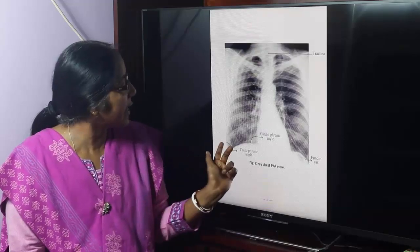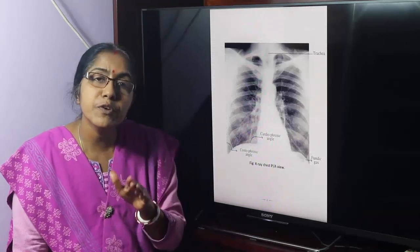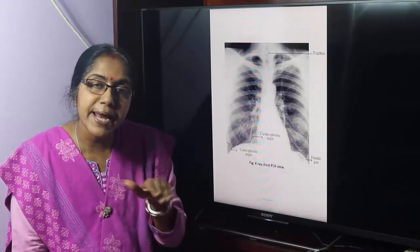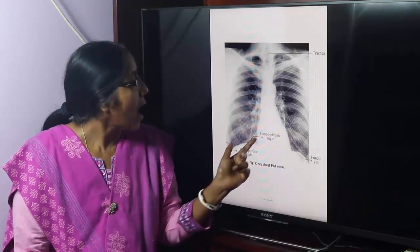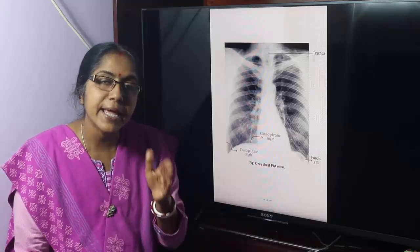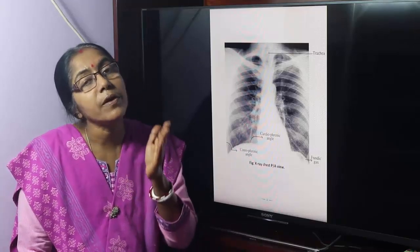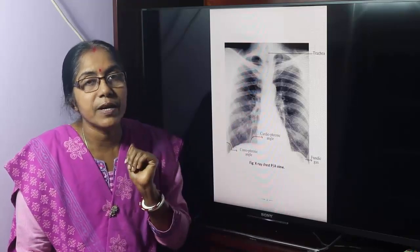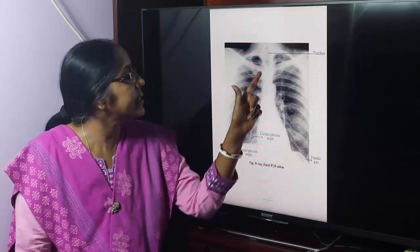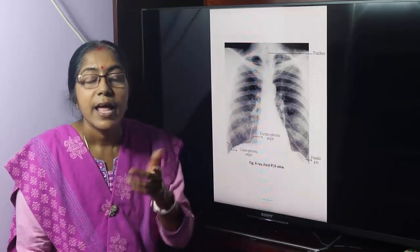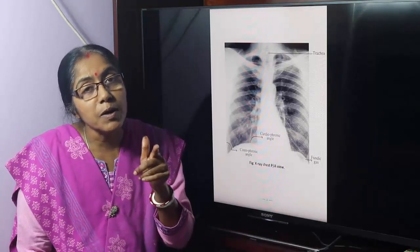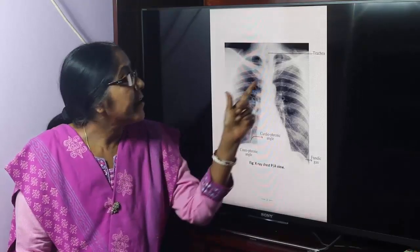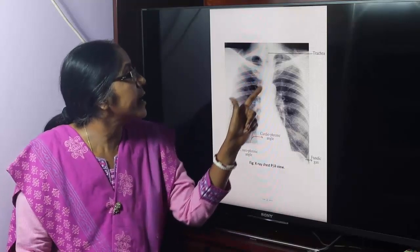This is the Cardiophrenic Angle and this is the Costophrenic Angle. Now, what do you mean by Cardiophrenic Angle and what do you mean by Costophrenic Angle? The angle between the rib and the diaphragm is the Costophrenic Angle, and the Cardiophrenic Angle is the angle between the heart and the diaphragm.